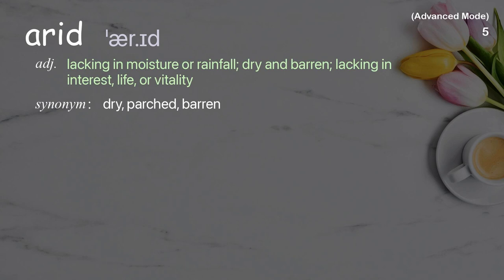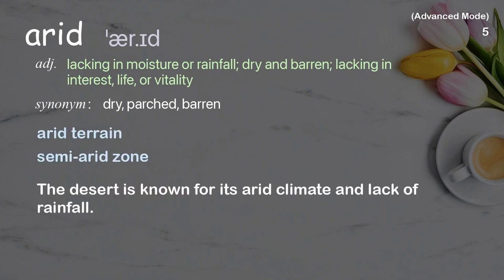Arid: lacking in moisture or rainfall, dry and barren, lacking in interest, life, or vitality. Examples: arid terrain, semi-arid zone. The desert is known for its arid climate and lack of rainfall.